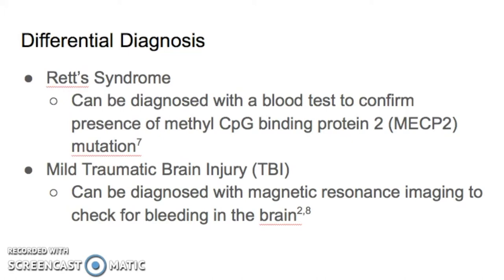A traumatic brain injury in a child can lead to many functional deficits depending on the severity of the TBI. Children that experience a mild traumatic brain injury can have similar symptoms to a child with cerebral palsy, such as spasticity and motor deficits. But with cerebral palsy, the symptoms will stay with the individual forever and will be non-progressive. Compared to a mild traumatic brain injury, treatment can improve symptoms leading to functional recovery. Ultimately, an MRI can differentiate between bleeding in the brain from a mild TBI compared to actual damage of white matter or a lesion in the brain for cerebral palsy.